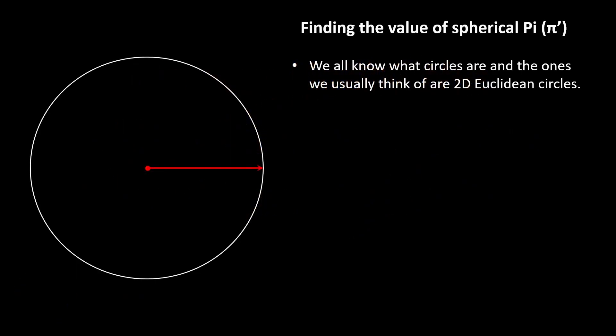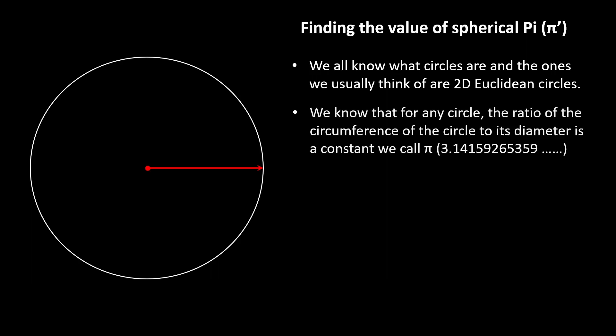Now we all know what a circle is, but the ones we usually think of are 2D Euclidean circles. We know that for any circle, the ratio of the circumference to its diameter is that constant we call pi, with a value of 3.14159 and so on. It's based on the radius and circumference, so pi equals circumference divided by 2R, or circumference divided by diameter.